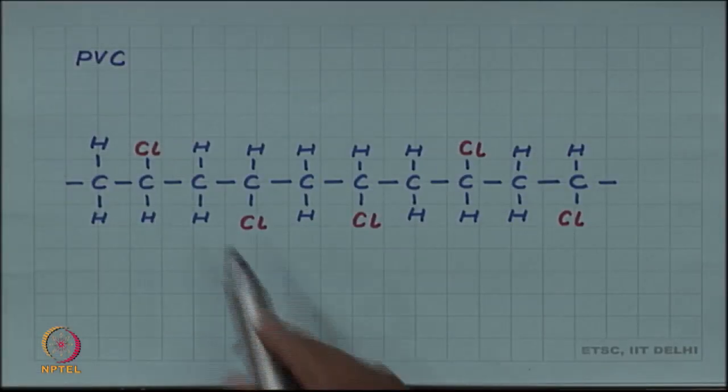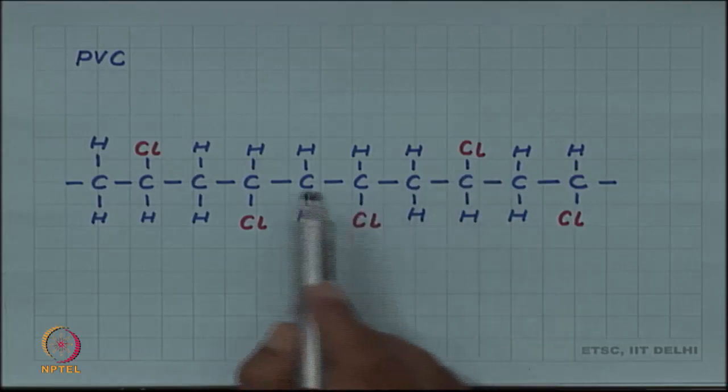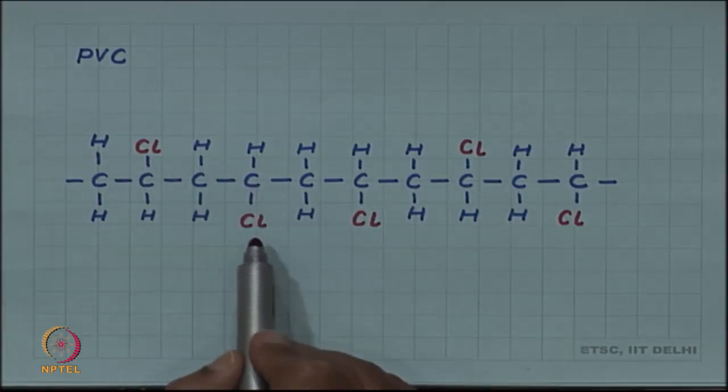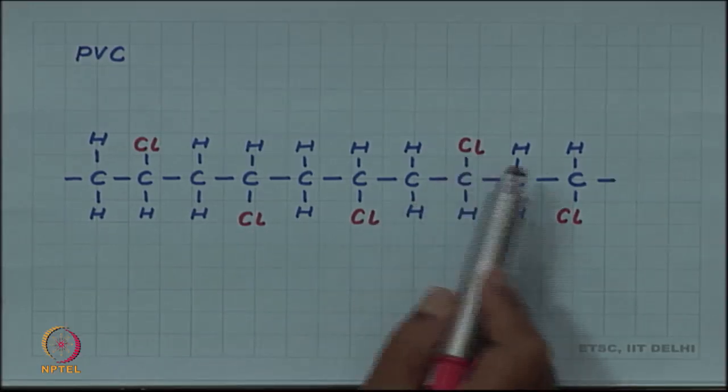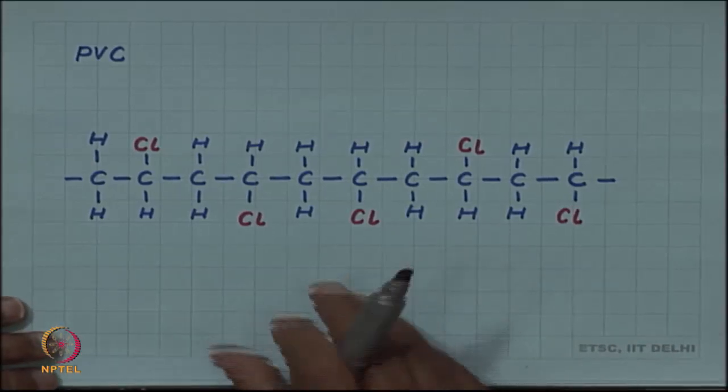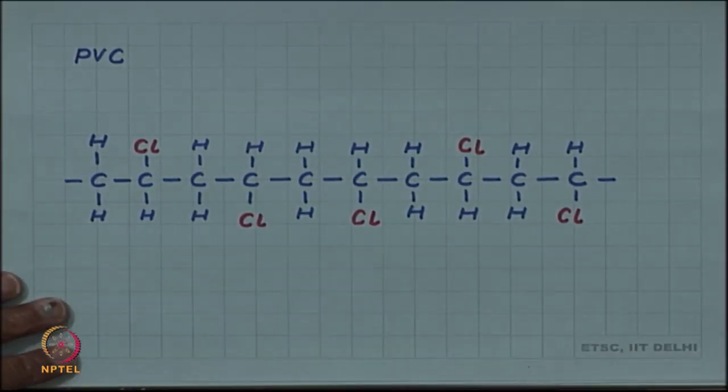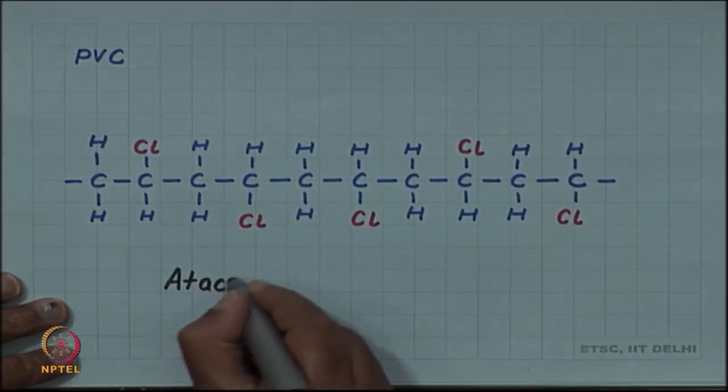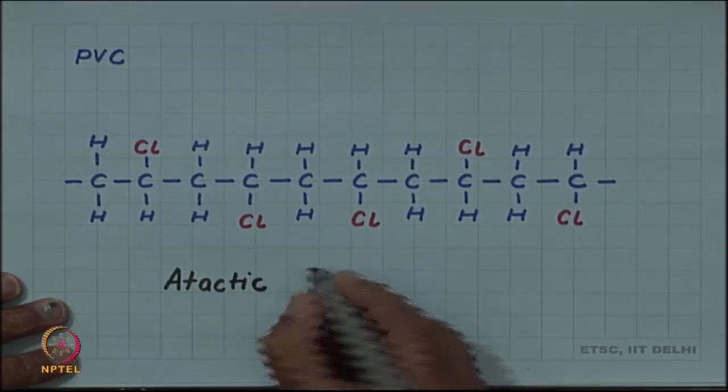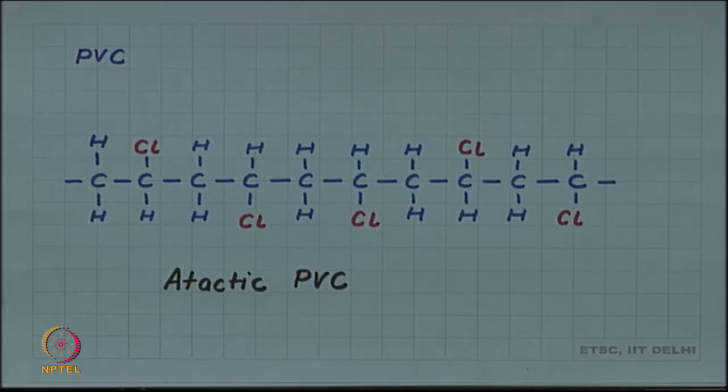You can imagine that you can also have some sort of random arrangement of chlorine molecules. It came on the left here, here it is coming on the right, the next one still comes on the right, then it goes on the left. If there is no such particular order, this is called atactic PVC. You can see that they are all of the same chemical composition.